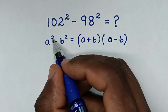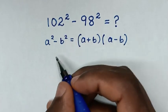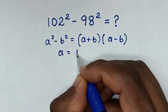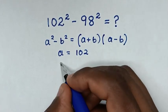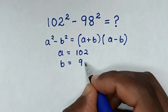So when you compare a square with 102 square, then a is equal to 102. And when you compare b square with 98 square, then b is equal to 98.